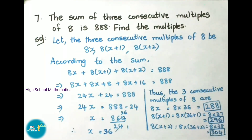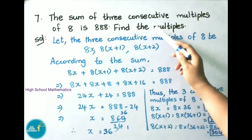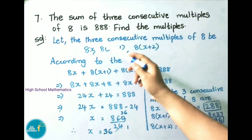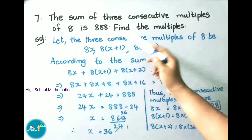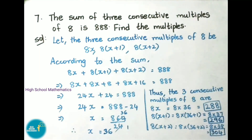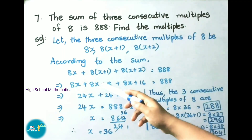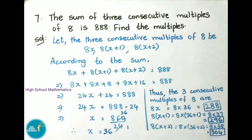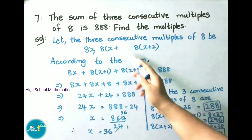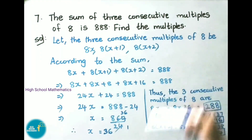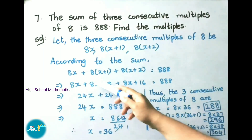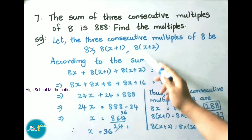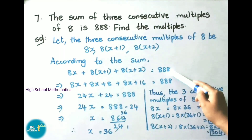See now question number 7: the sum of three consecutive multiples of 8 is 888. Find the multiples. Let the three consecutive multiples of 8 be 8x, 8 into x plus 1, and 8 into x plus 2. According to the sum, the sum of these three multiples is equal to 888. So 8x plus 8 into x plus 1 plus 8 into x plus 2 equals to 888.